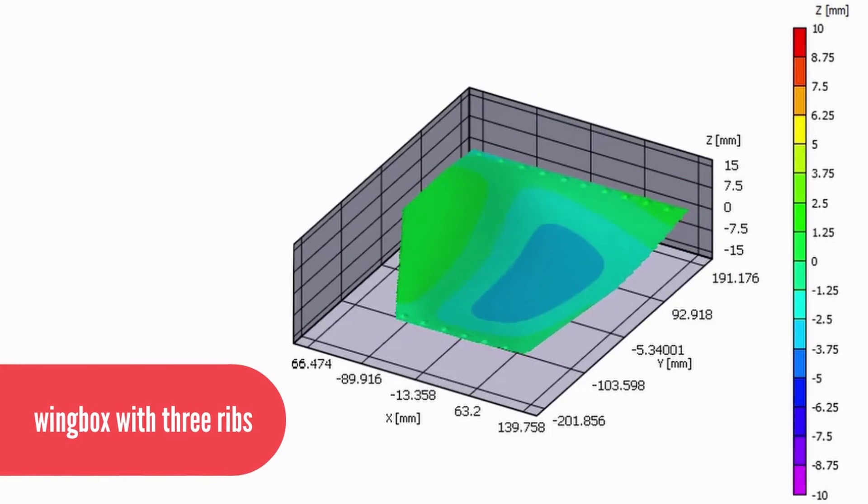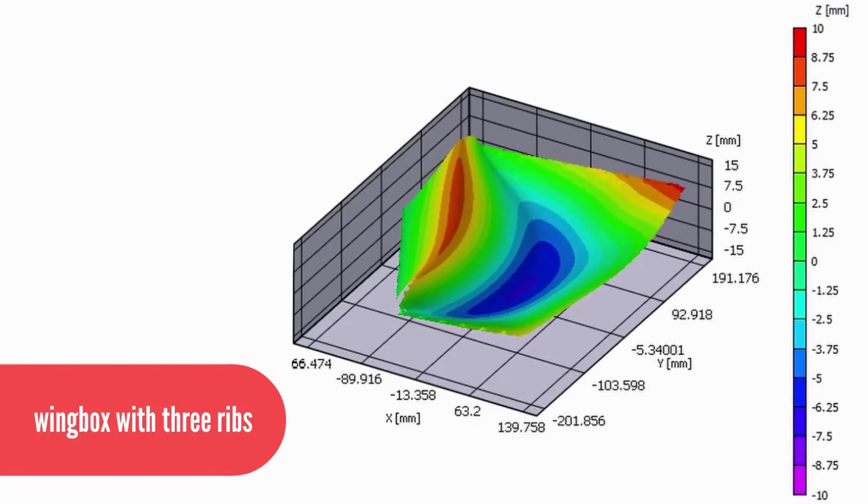Finally, let's look at the wing box with three ribs. We see the same upwards and downwards dent in the panel, but the deformation is even smaller than in the one rib box. Buckling is still occurring, but it's not nearly as severe.